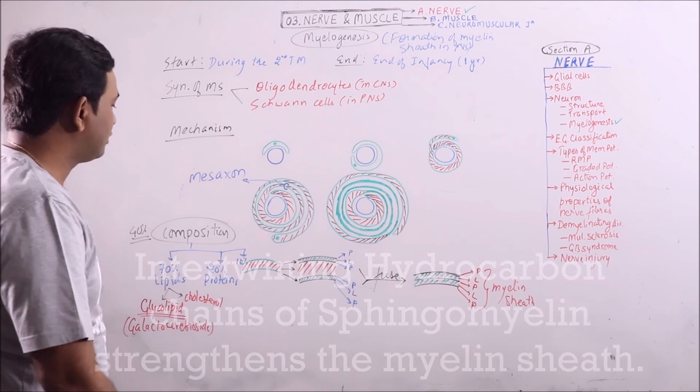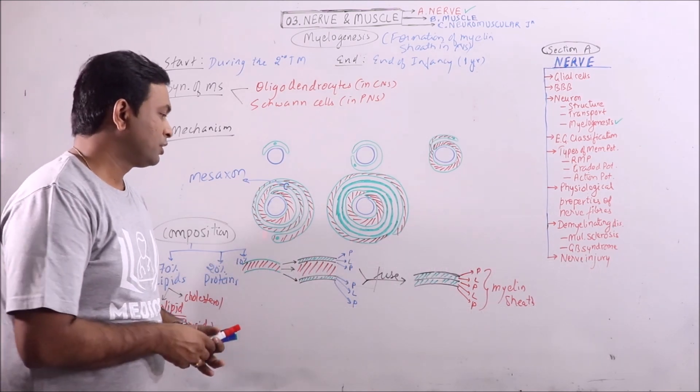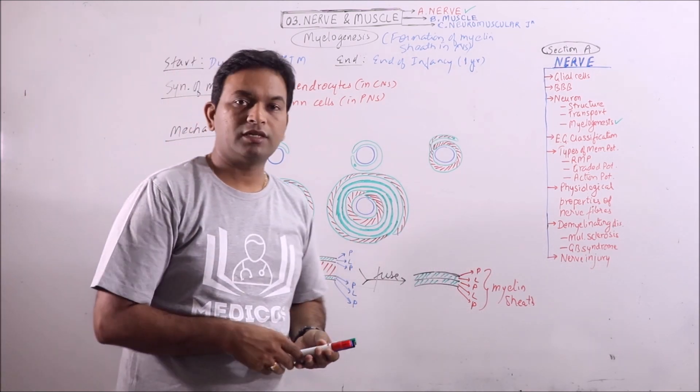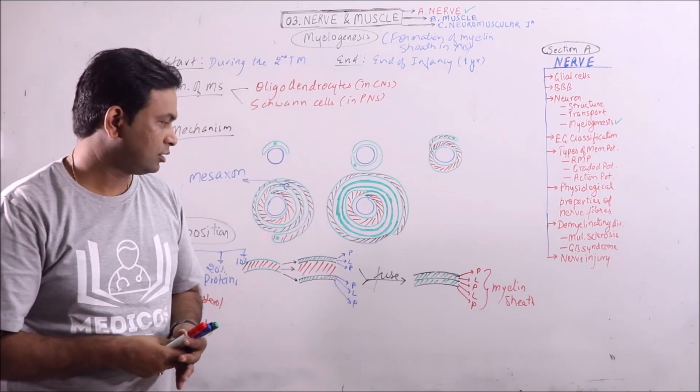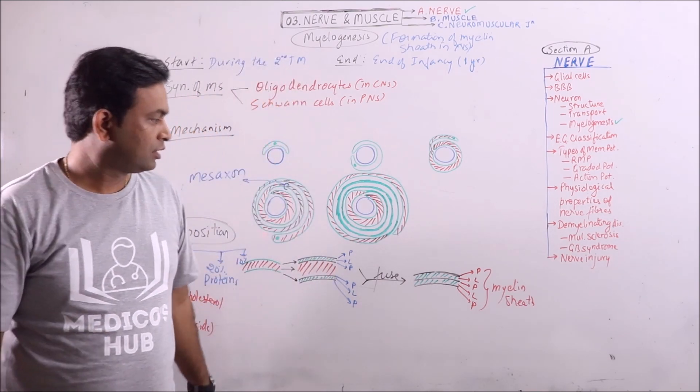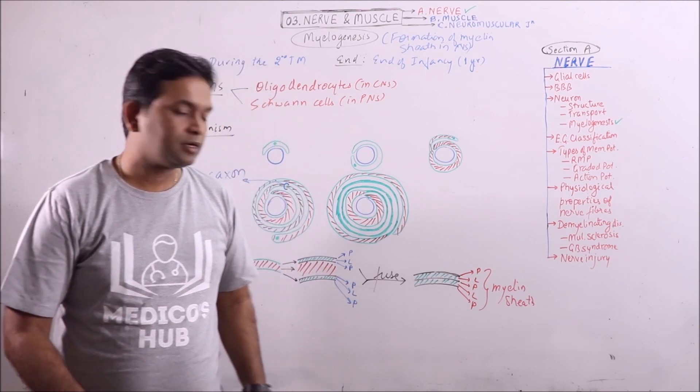So this is the composition of myelin sheath. Myelin sheath provides insulation along the axon where it is present. So this is the myelogenesis.